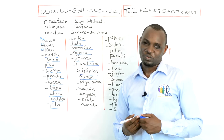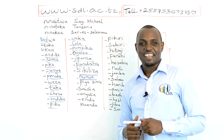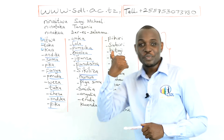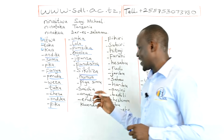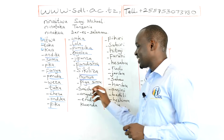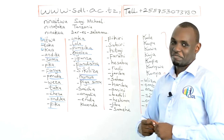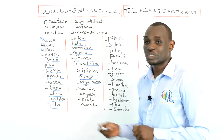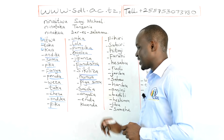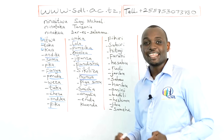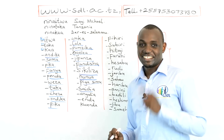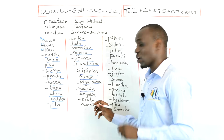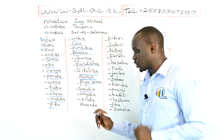Piga Simu means call; Ku Piga Simu means to call, to make a phone call. Saidia means help; Ku Saidia means to help. Angalia means to look or to watch; Ku Angalia means to look or to watch.